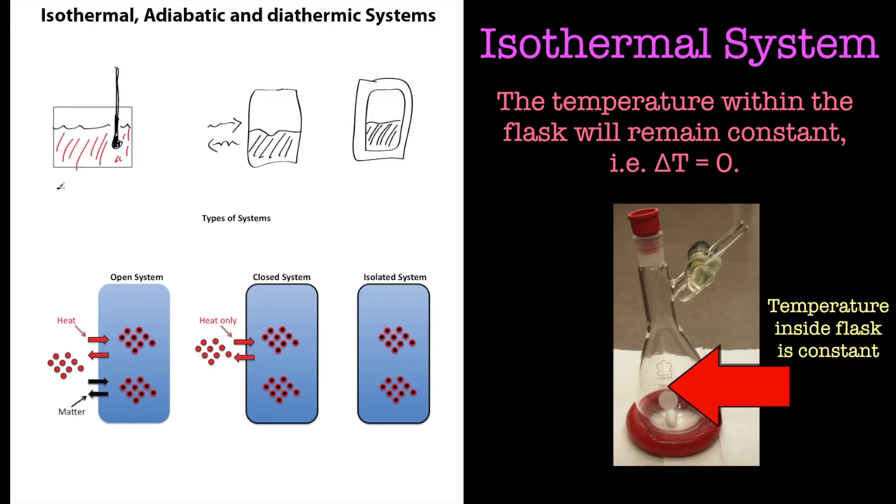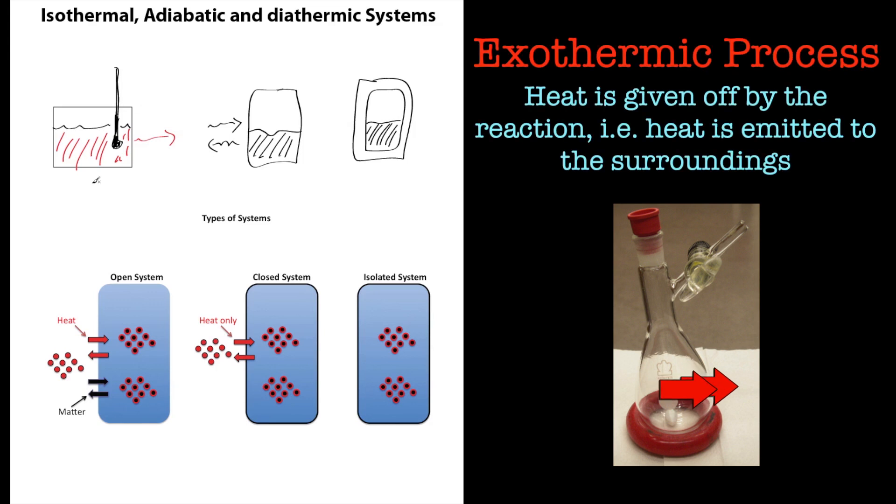So if it's an exothermic reaction, then heat will be lost to the environment and the surroundings in order to keep the temperature constant. There's no change in temperature, so delta T equals zero inside the reaction vessel or our system of interest.